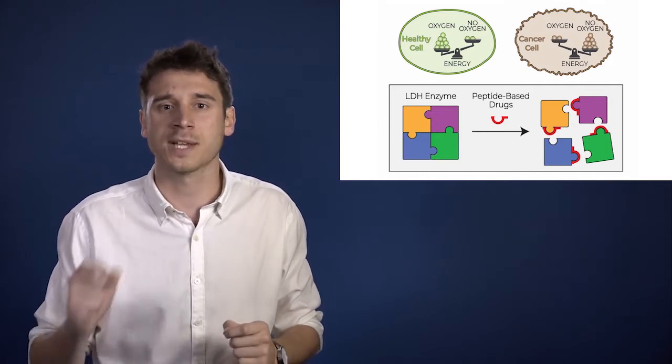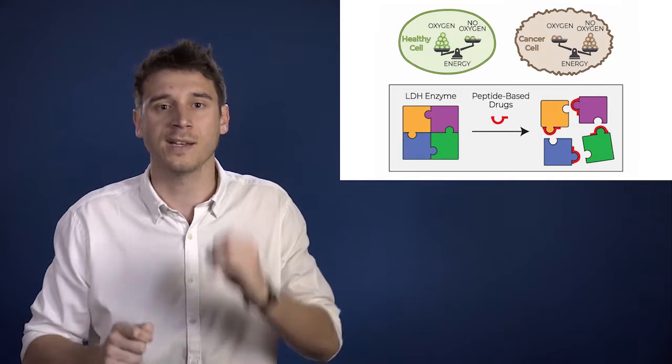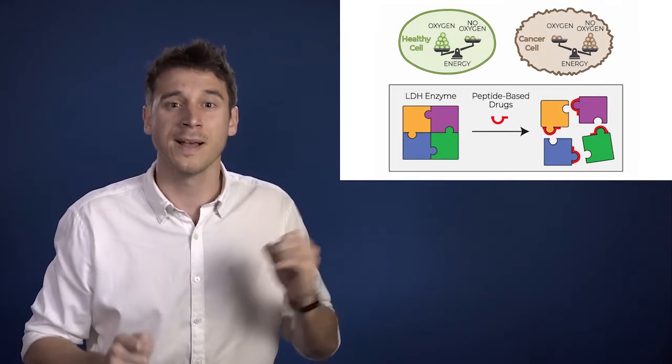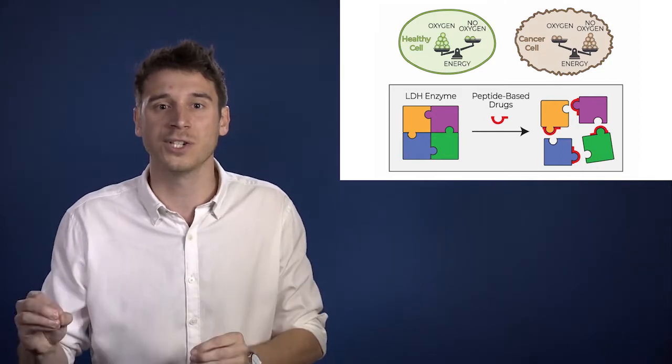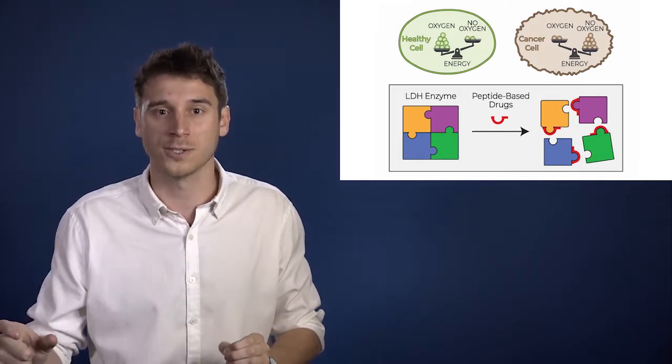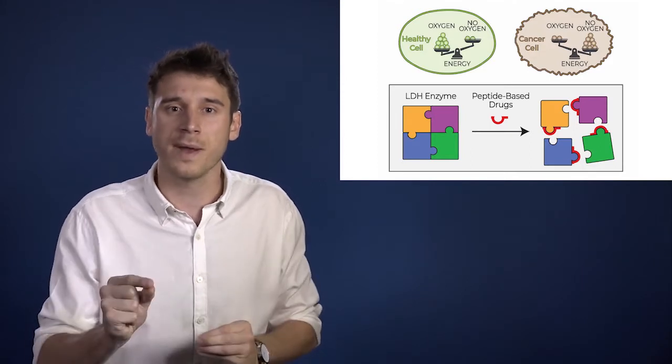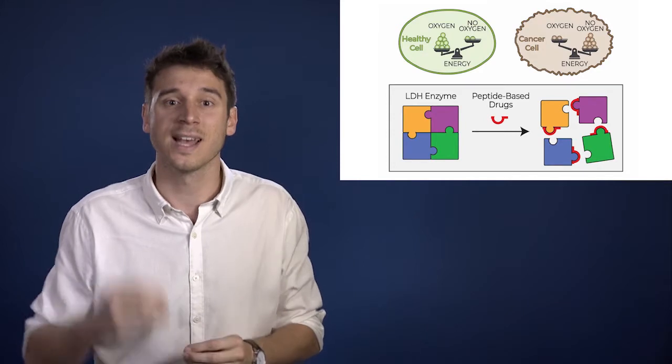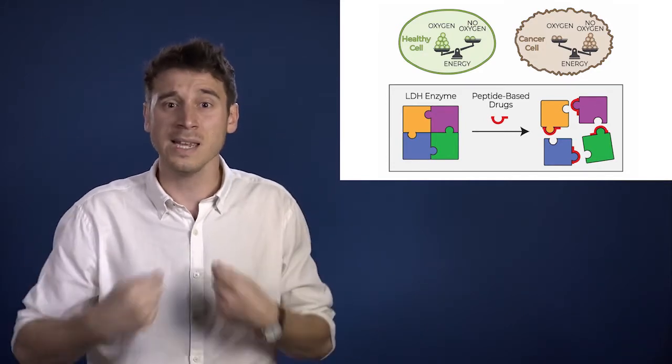Now, when a cell becomes cancerous, many things change, including the way to obtain energy. As you can see, the balance scale is reversed here because the energy without oxygen becomes the main source. This phenomenon is a hallmark of cancer, and it's very relevant because that's how cancer cells get the energy to keep growing and growing constantly.